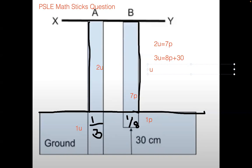So now, one unit equals to 3.5 parts. So three units equals to 10.5 parts equals to eight parts plus 30. So 2.5 parts equals to 30. One part equals to 12.